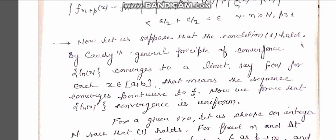It converges pointwise to f because this inequality holds for all x. If we put x equal to a, the inequality is true; similarly for b, and for all points lying between a and b the inequality always holds. This implies that the sequence of functions is pointwise convergent and converges to f(x).